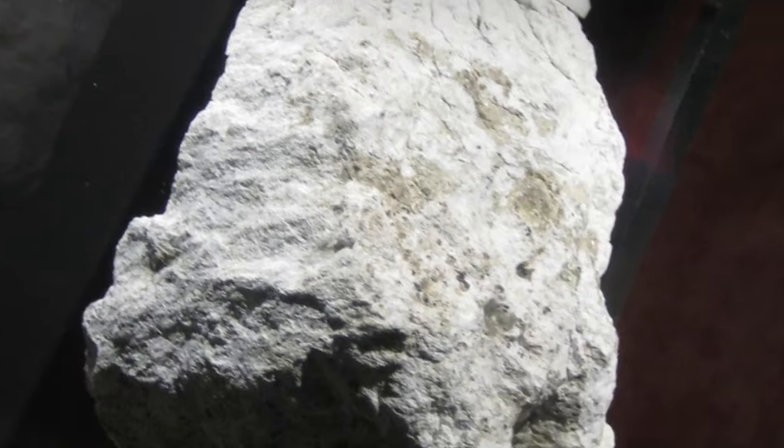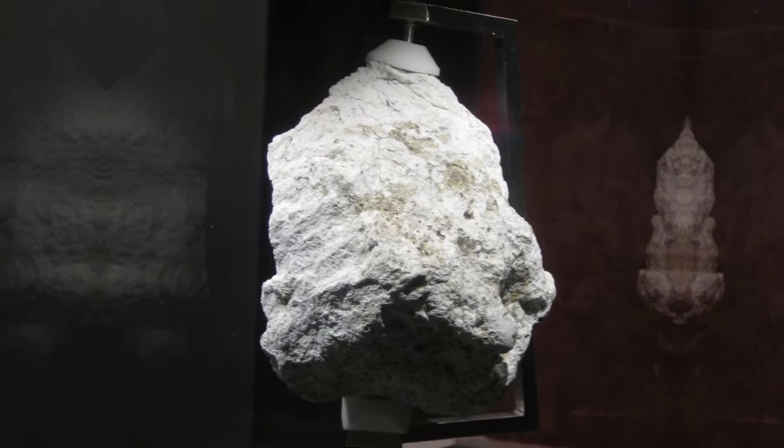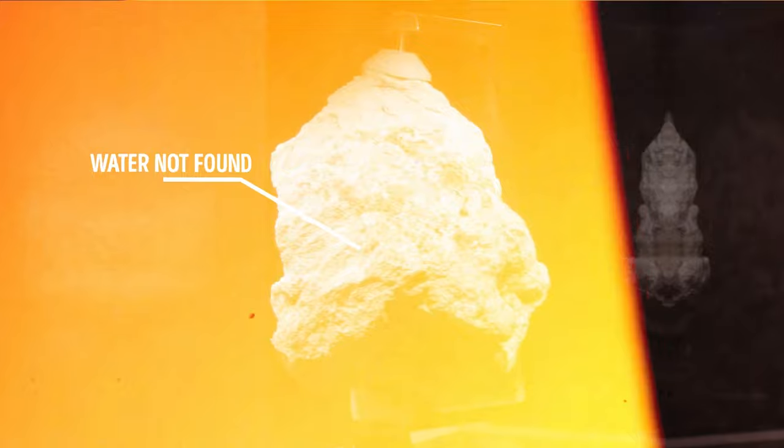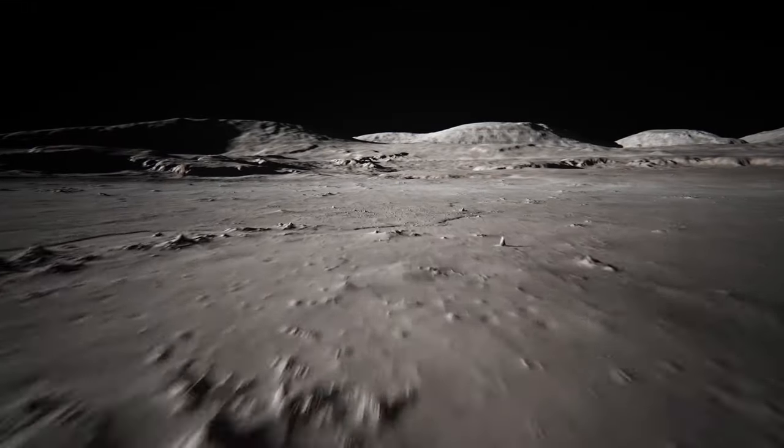But when astronauts from the Apollo missions went to the moon, they brought back soil samples, and scientists found no signs of water in them. So everyone went back to thinking that the moon was completely dry.